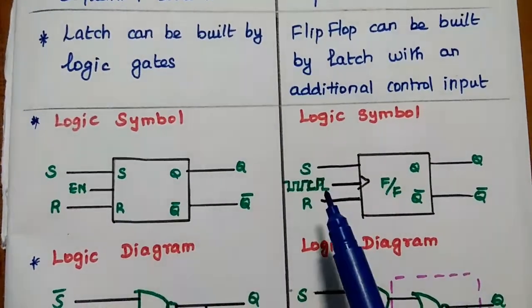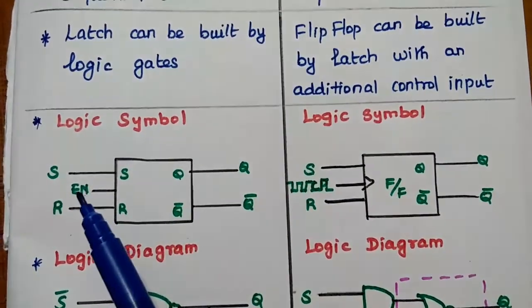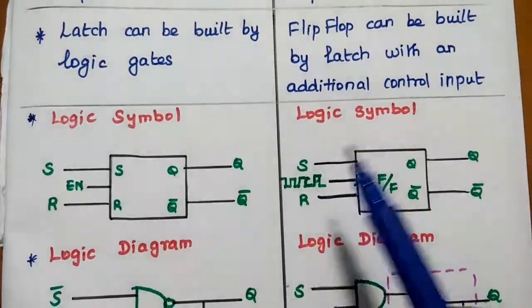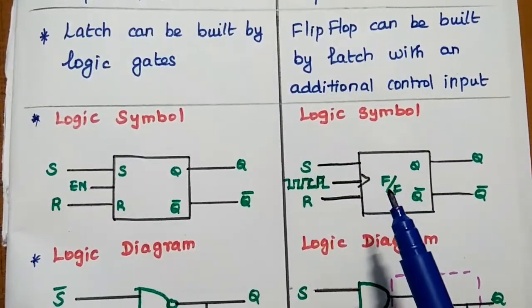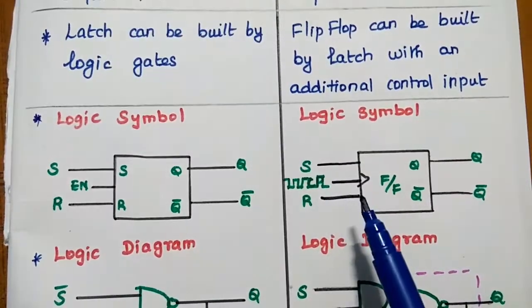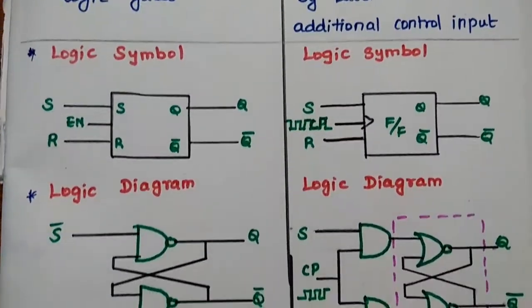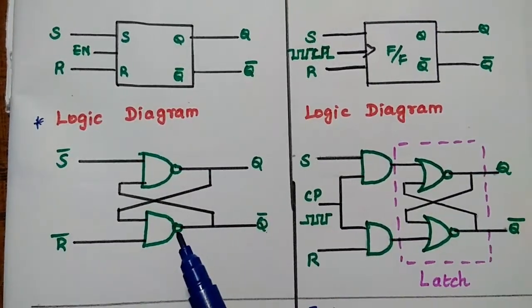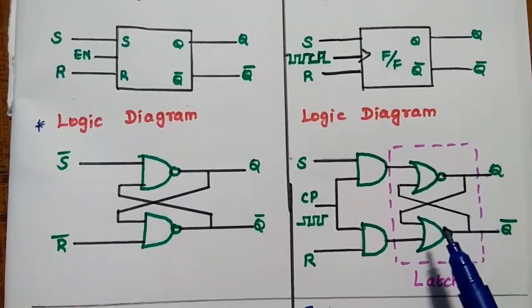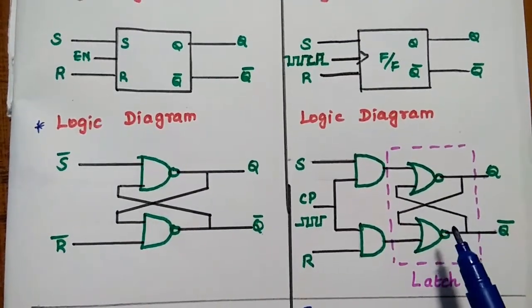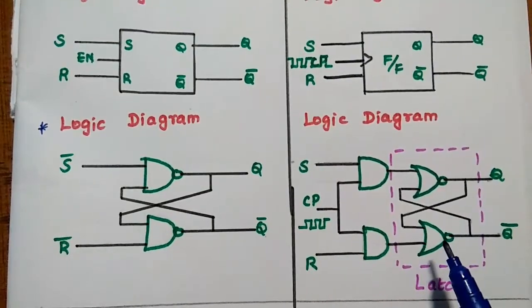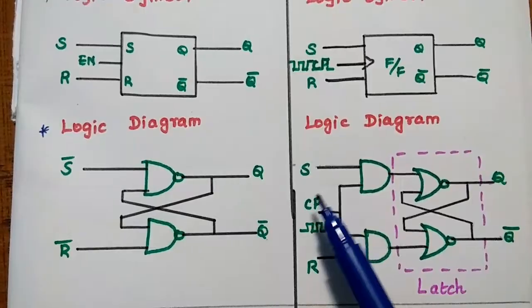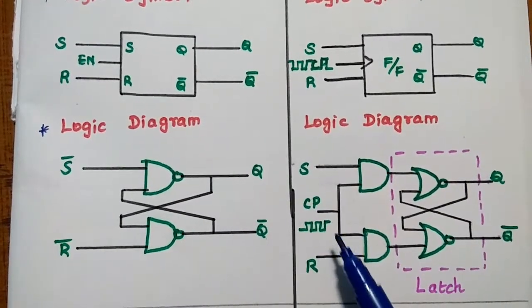That is the major difference: in this latch, we are using an enable input, whereas this flip-flop is controlled by clock pulses. The logic diagram of latch is given here. The logic diagram of flip-flop consists of a latch with an additional control input, that is, the clock pulses.